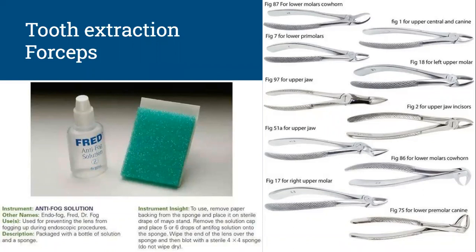Let's look at procedural considerations — pay attention to positioning. For oral maxillofacial cases, the patient is going to be in supine with their head tilted back to provide exposure. If they need more exposure, they'll put a towel roll to extend the neck. If it's placed right under the shoulders near the armpits, that's called an axillary roll, and it also helps extend the neck back.